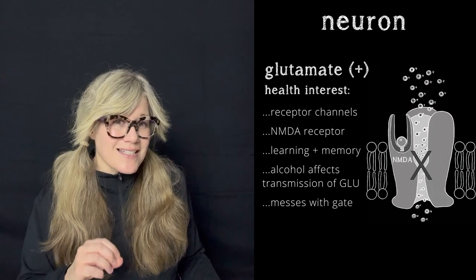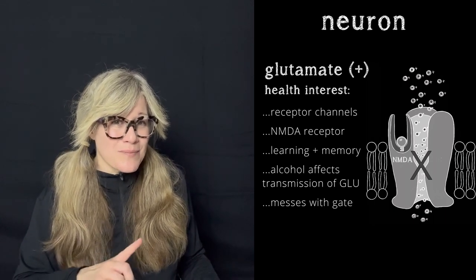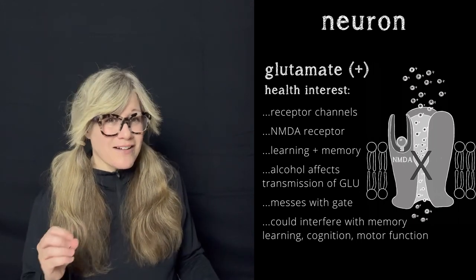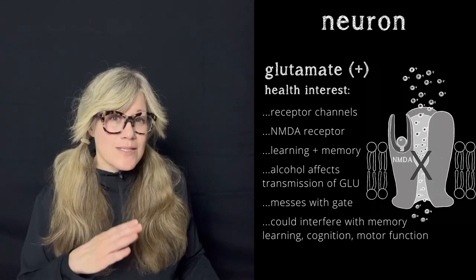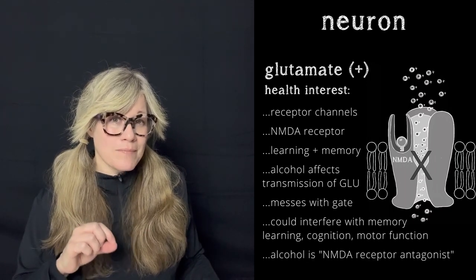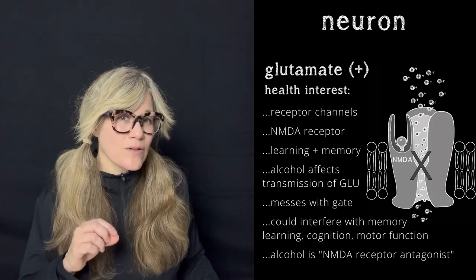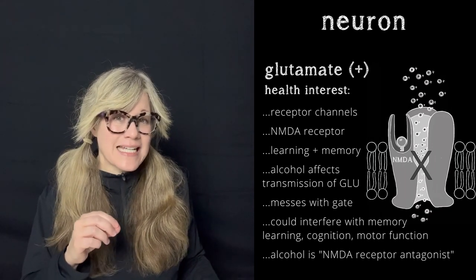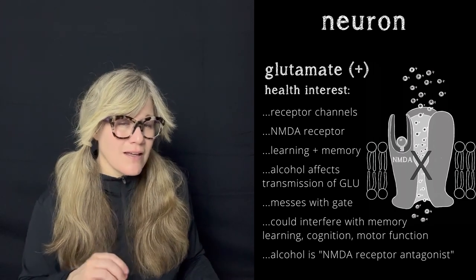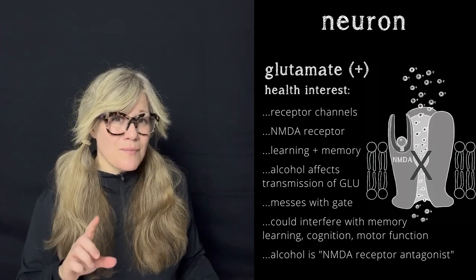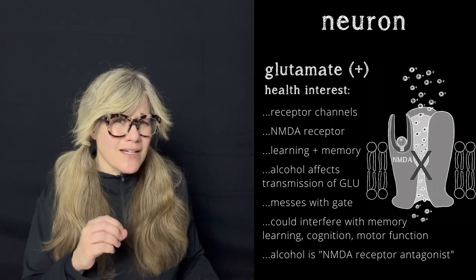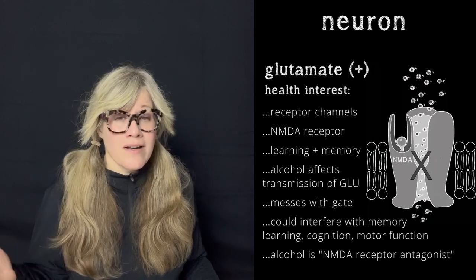Given the processes glutamate is involved with, tampering with its ability to do its job interferes with memory, learning, cognition, and even some motor function. So when you hear or read someone say that alcohol is an NMDA receptor antagonist, what they're really saying is that alcohol inhibits the function of that particular glutamate receptor. Alcohol affects other cellular functions, but I wanted to mention the NMDA receptor because it could be difficult to understand why this mechanism matters without some context.